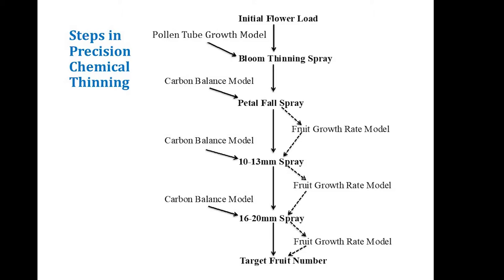Not too far distant, based on weather forecasts, we will be at petal fall. The carbon balance model is predicting we will be at the petal fall thinning spray by Wednesday of next week because it's going to happen very quickly due to warm temperatures. I want to emphasize that for Honeycrisp, Fuji, and Gala — where there was little frost damage — we need to blossom thin and then petal fall thin. Then we need to assess where we are using the fruit growth rate model.